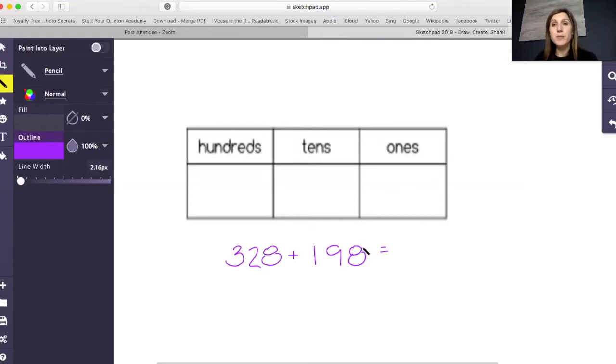Hi, let's talk about adding three-digit numbers on the place value chart. Here I have a place value chart and a problem so we can get started.